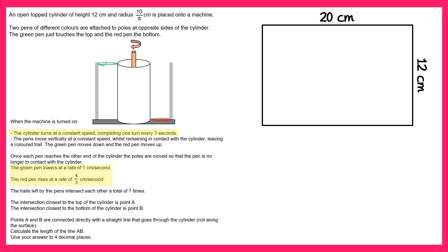Now since the height of the cylinder is 12 centimeters, the green pen will take 12 seconds to go from the top to the bottom. And if the cylinder does one full rotation every three seconds it will do four in 12 seconds.